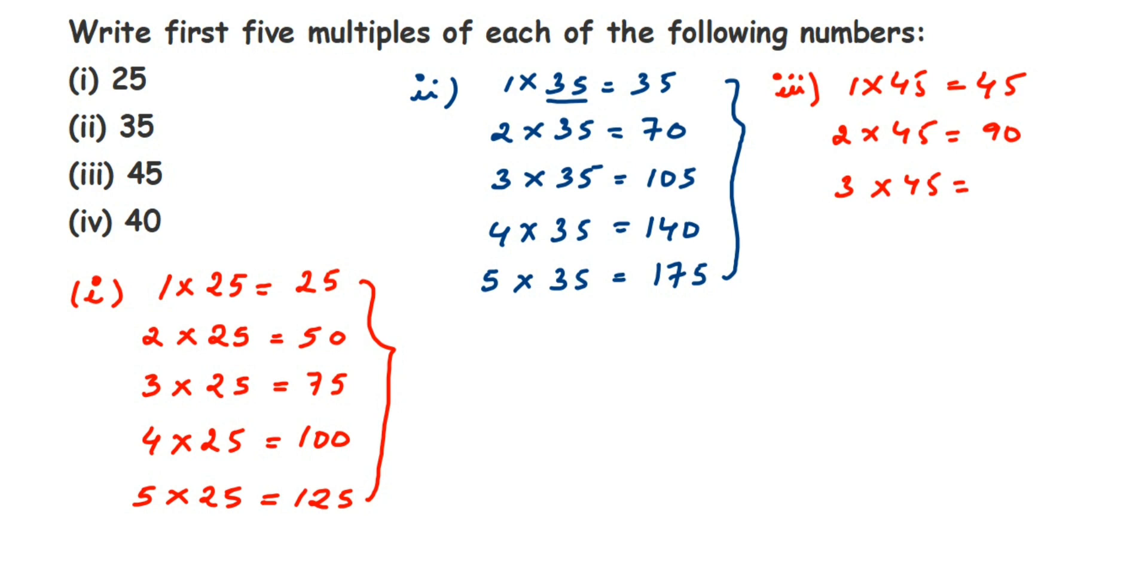So 3 x 45 is 135. 4 x 45 is 180. And then 5 x 45 is 225.